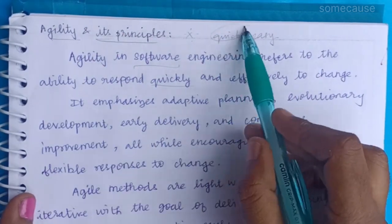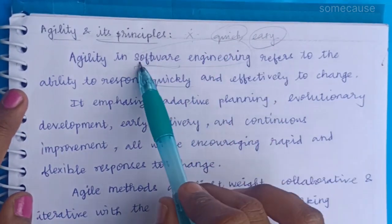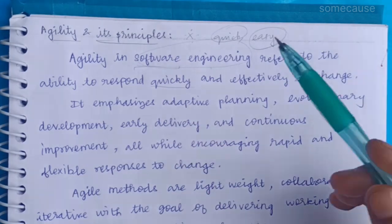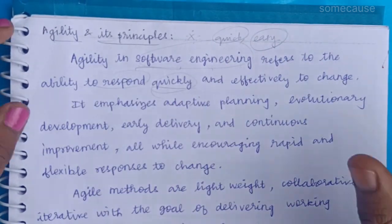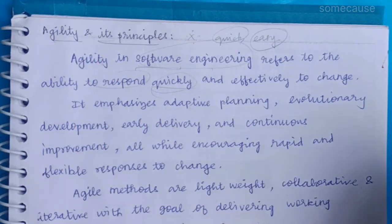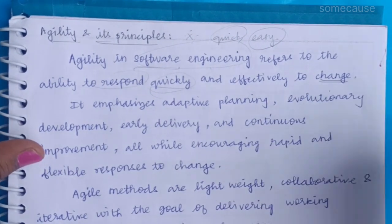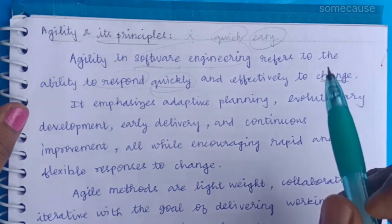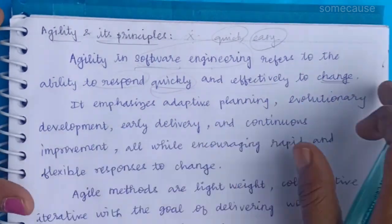In software, we are going to talk about quick and easy. Where is agility in software engineering? How do we respond quickly to the client and deliver the software? Agility means that we are going to deliver the software, and the product is made by the client's side, so we will be able to change and adapt. That is agility.